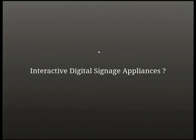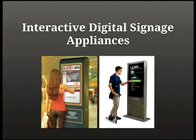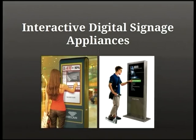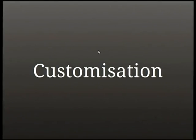Interactive digital signage appliances are things like kiosks you come up to in shops or shopping centres that you interact with in some way — sometimes there's no direct interaction, maybe just walking up triggers a sensor that plays a video or gives you some kind of message. If you want an Android device turned into an appliance, you need to customize it.